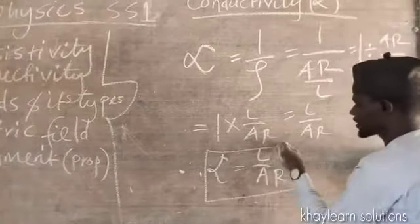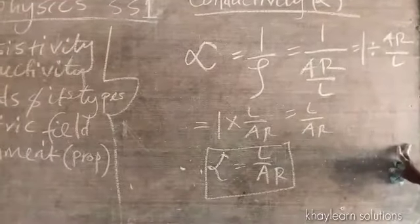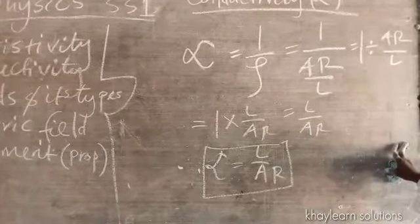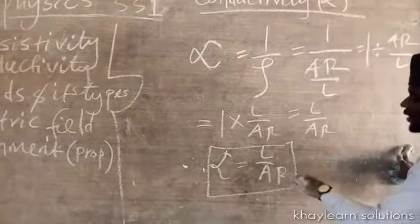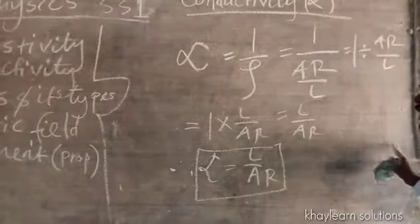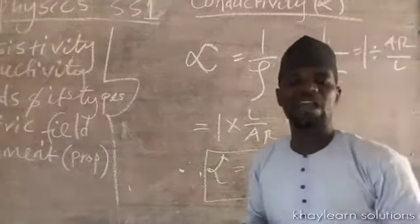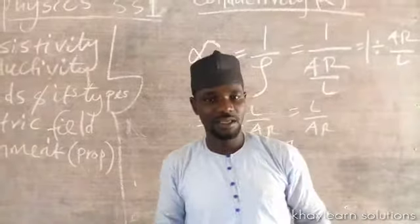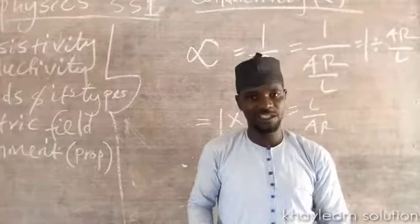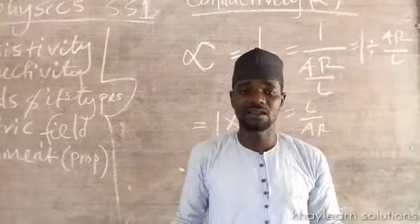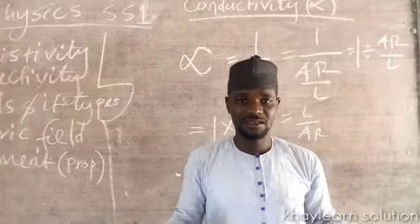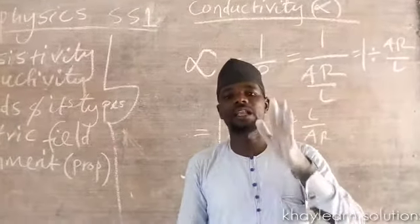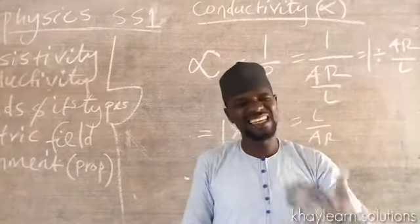This is the formula for conductivity. If you rearrange L over AR — putting L and AR in reverse positions — it comes back to resistivity. Every material or metal has conductivity and, at the same time, resistivity. If you have resistivity, you will have conductivity. This applies mostly to metals, whether liquid or solid metals, and to some electrolytes that have acidic or basic nature — like salt solutions, which can conduct electricity.